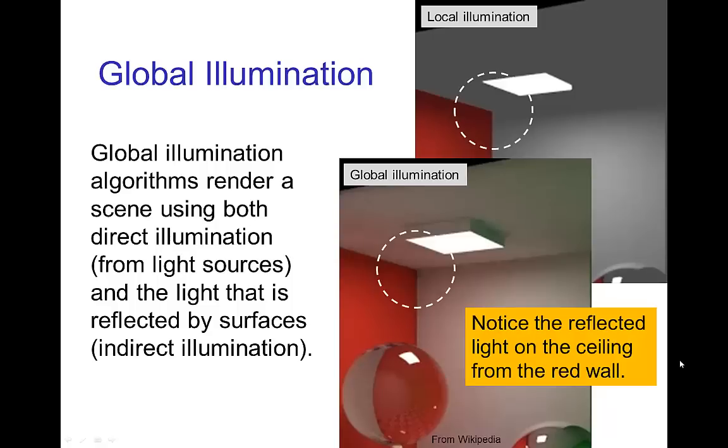Now, by default, simple illumination rendering algorithms don't represent this reflected light. They only have light that is directly from light sources. However, there's a class of algorithms in computer graphics known as global illumination, and they include both direct illumination from light sources, and also light reflected by surfaces, this kind of reflected light, this indirect illumination that we've been talking about.